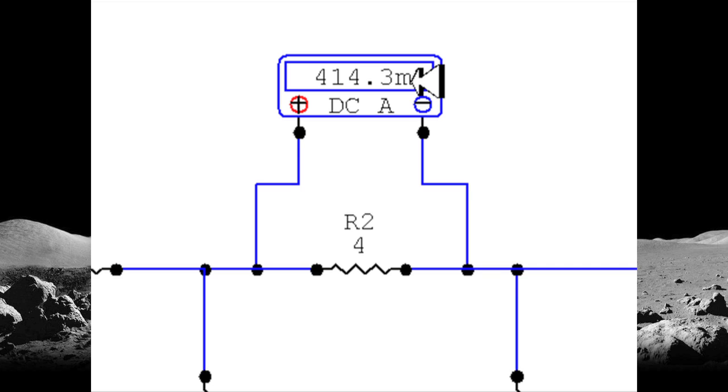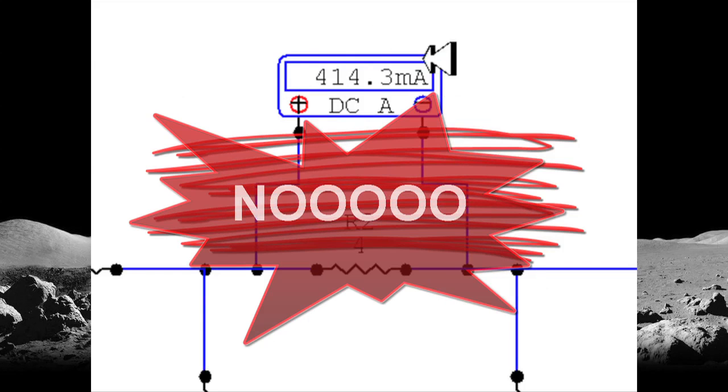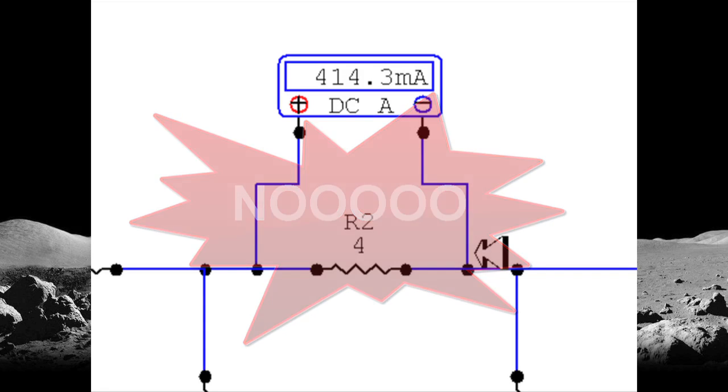So when I run the simulation, now the ammeter says that the current is 400 milliamps instead of the value that I had before, which was the right one. This, I repeat, is a firing offense. You never connect an ammeter in parallel with the branch you're going to be measuring the current in. No, no, no, no. You have to connect the ammeter in series with that branch.